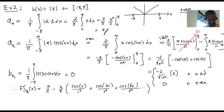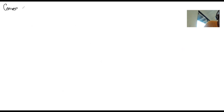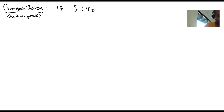What do these series have to do with the original function? This is a major question that took something like 100 years to figure out — it's not actually easy to understand what these series have to do with the function. But the end result is very clean — it's something I'm going to call the convergence theorem. This is very hard to prove and it's beyond this course, but here's what it says: if you have a function in the vector space V_π, then its Fourier series always converges.